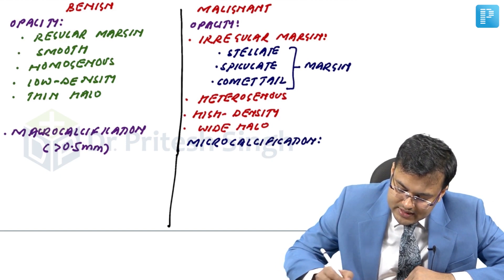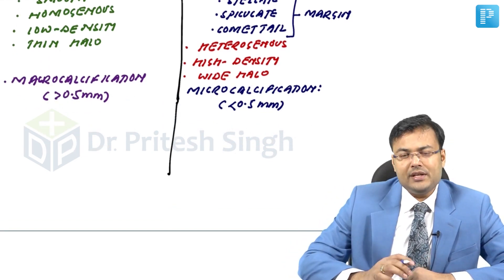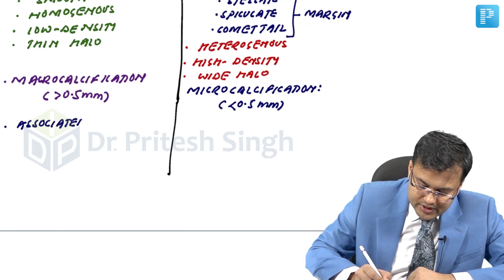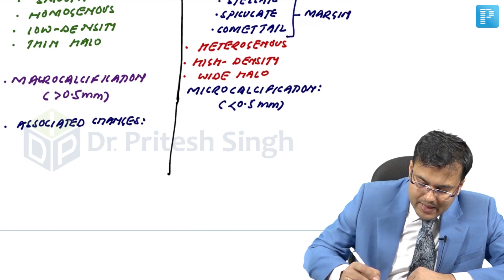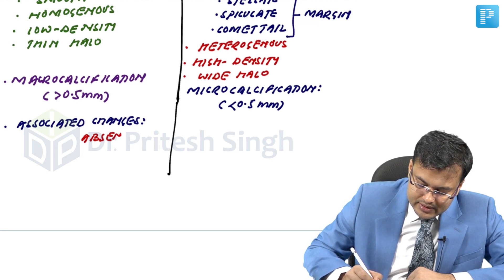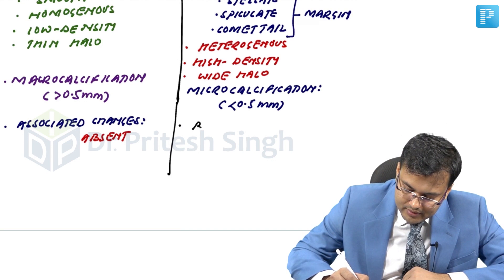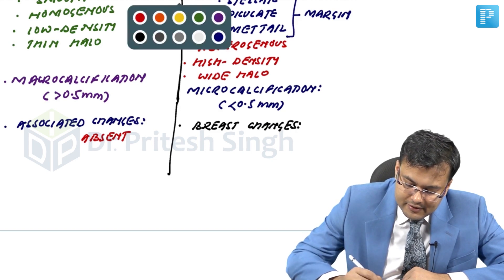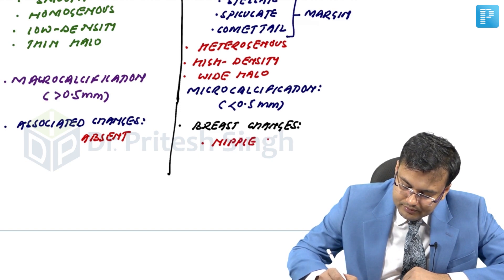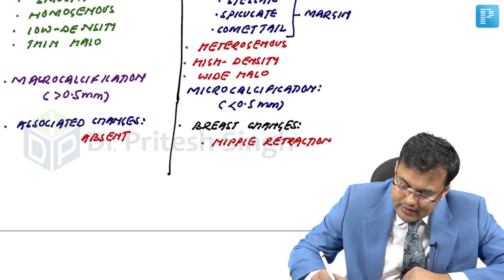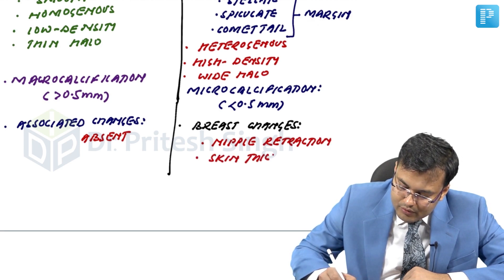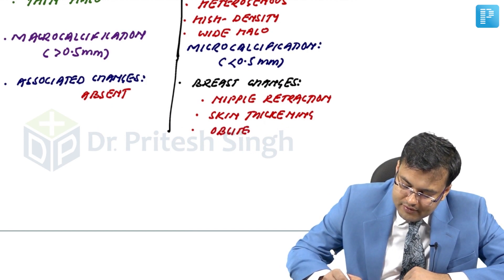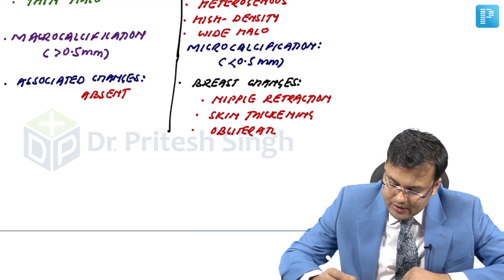The third feature is associated changes in the breast. In benign lesions, associated changes are generally absent, but in malignant lesions they are present. The changes seen are: first, nipple retraction; second, skin fixity or skin thickening; third, obliteration of the retromammary space.